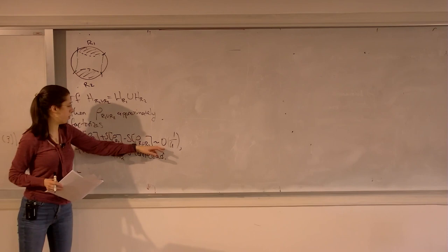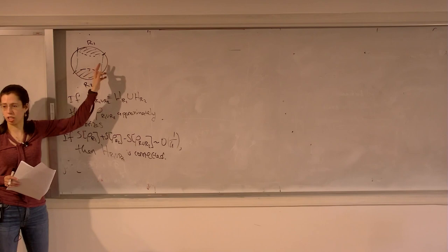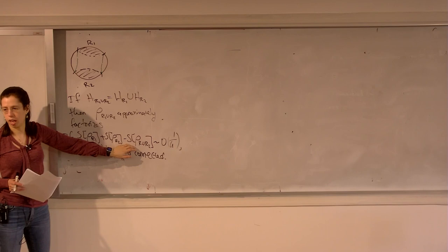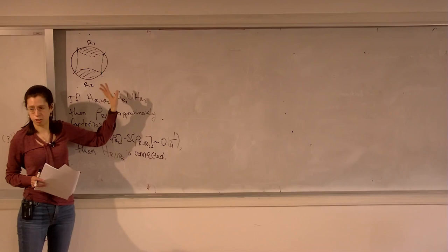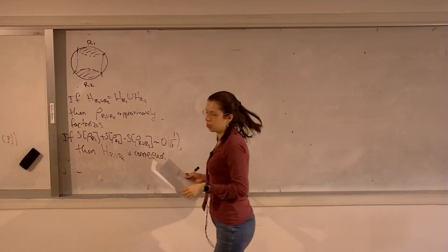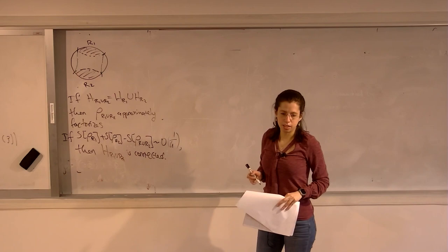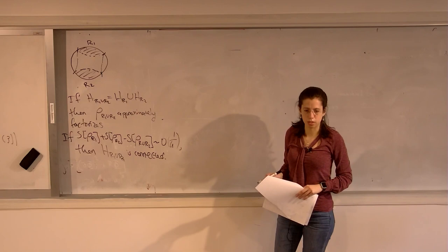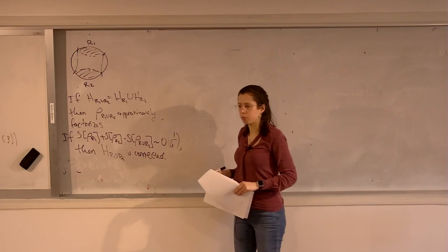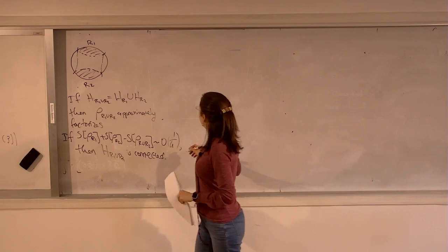We have to be careful here because this turned out to be manifestly false once we start adding quantum corrections. This is true classically, but as soon as you have quantum corrections, you can have a situation where this quantity is order 1/G but the region H is disconnected. I'll give an explicit example of where that happens when we have quantum corrections. It's the same type of phenomenon that allows quantum extremal surfaces where there are no classical extremal surfaces.